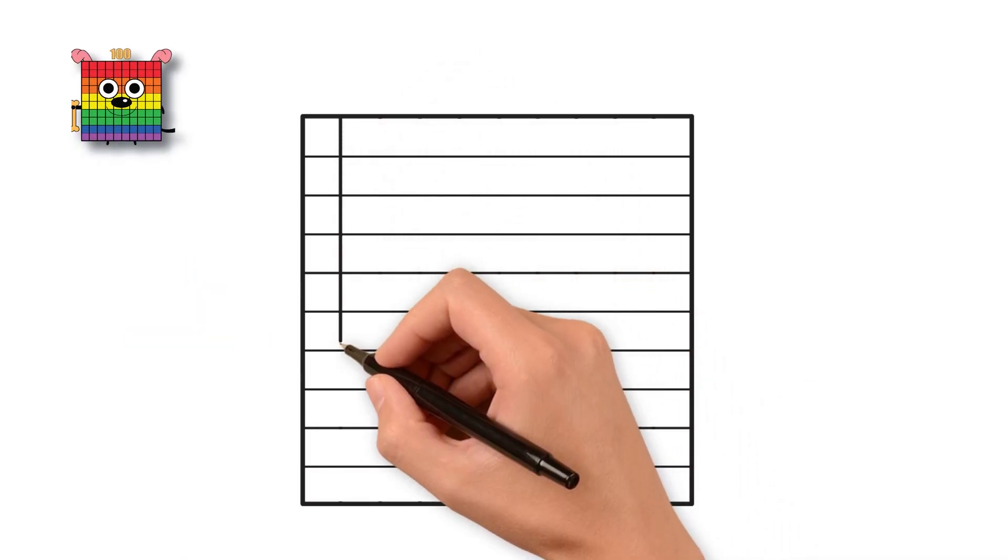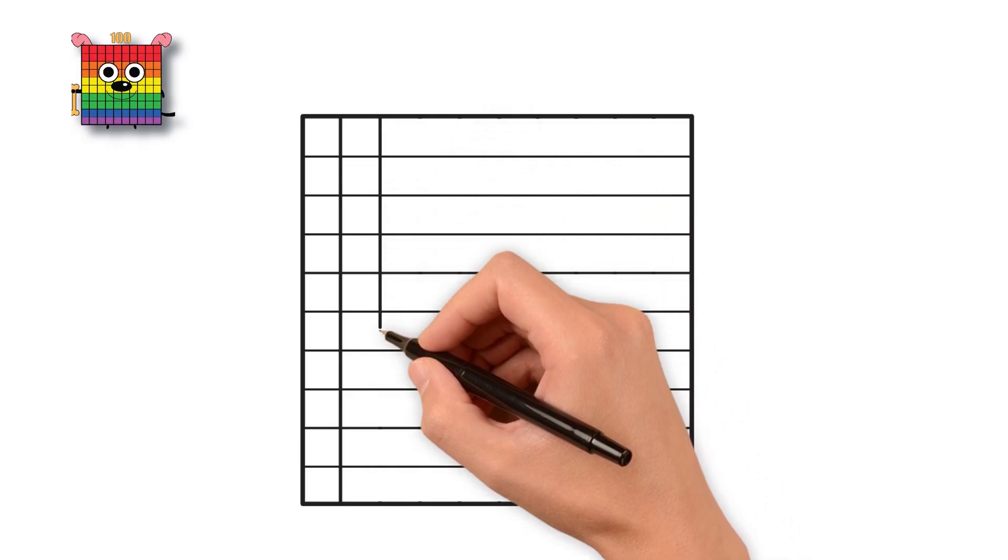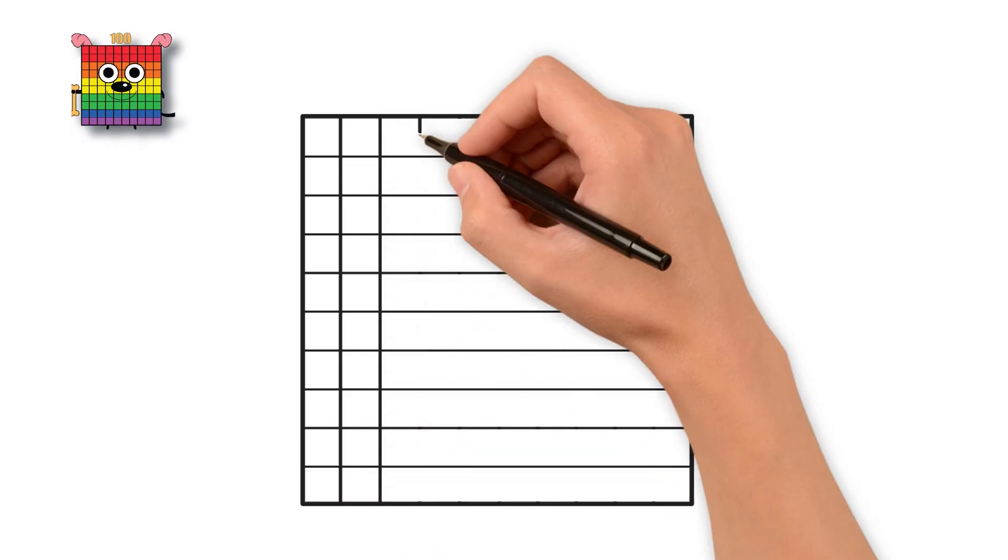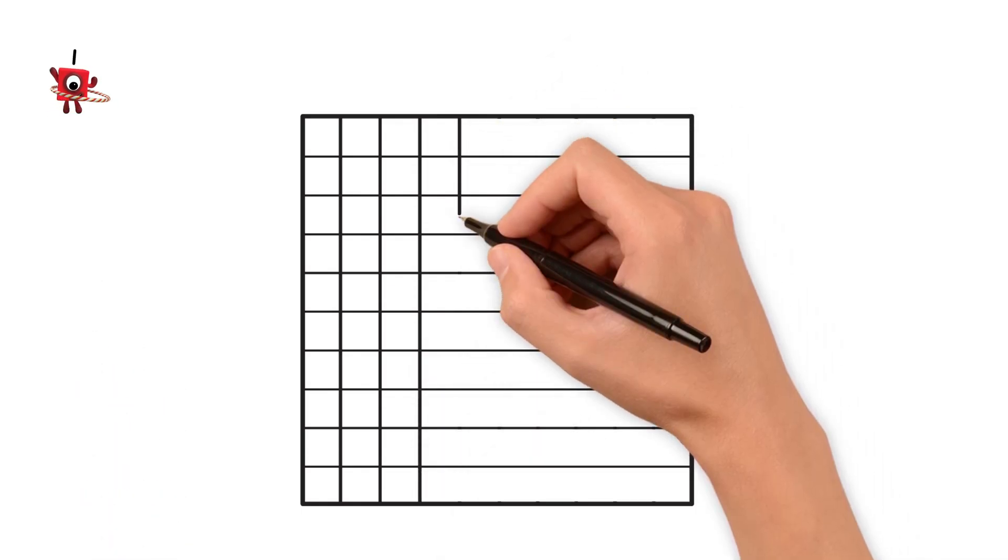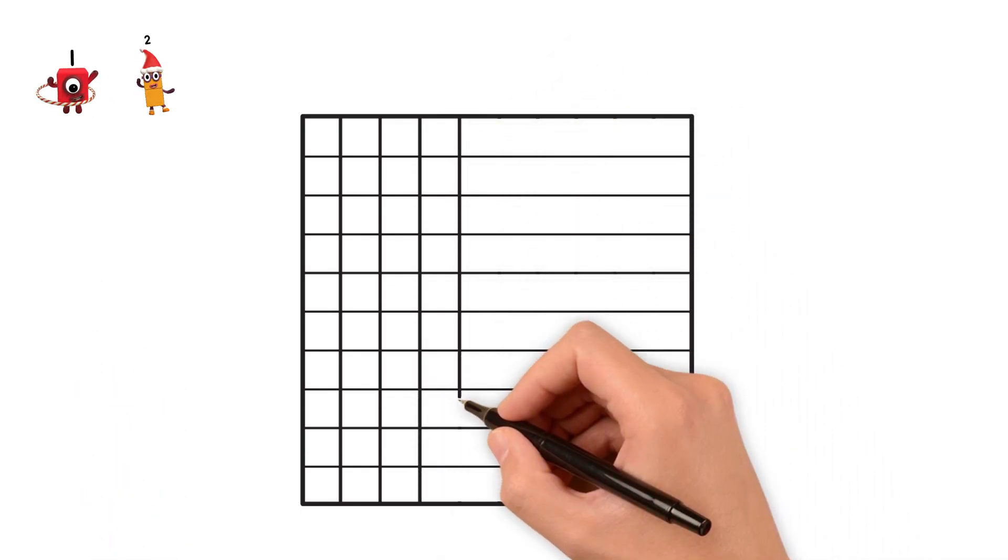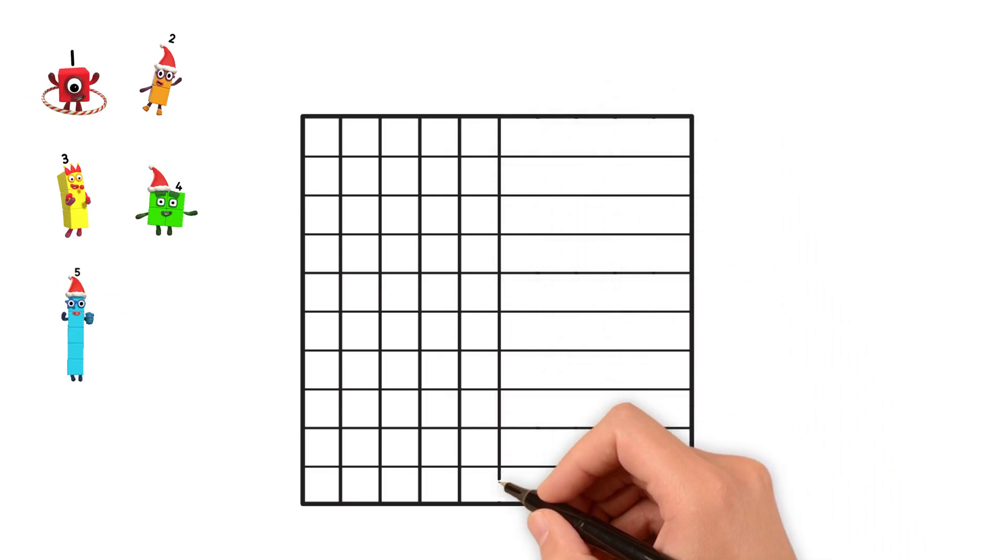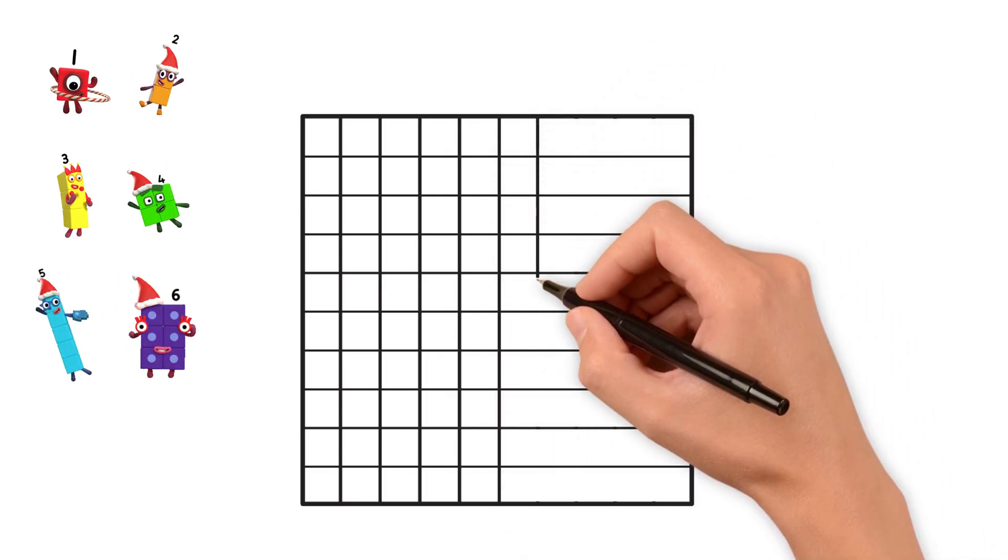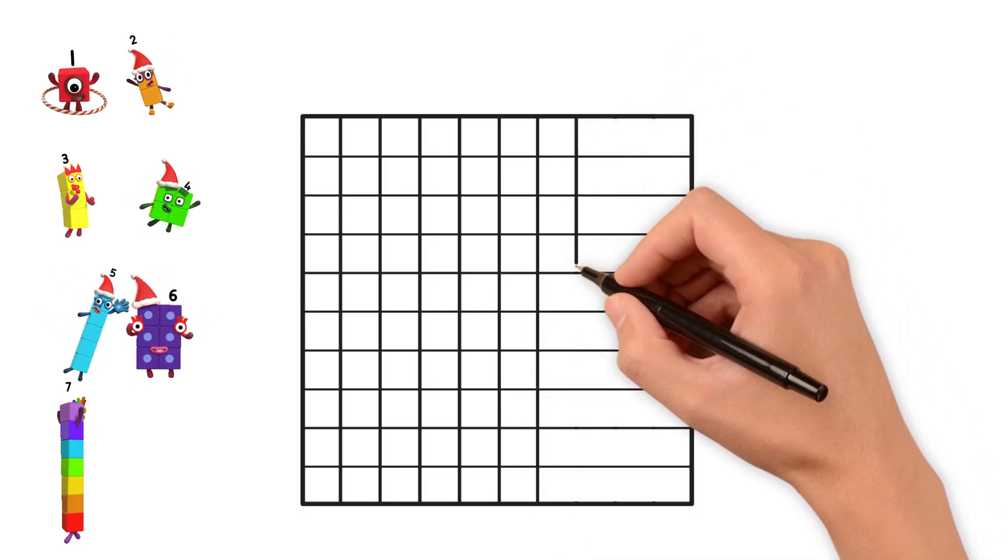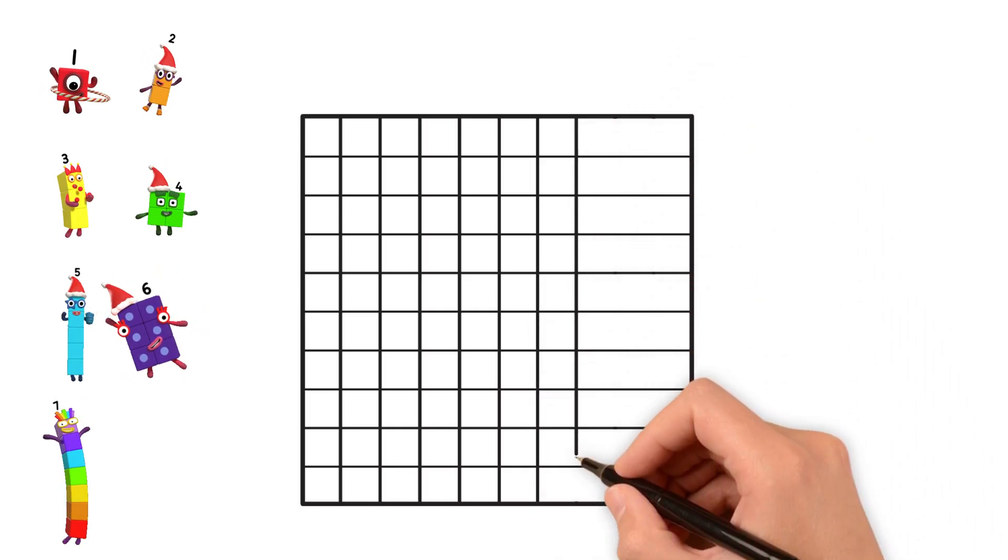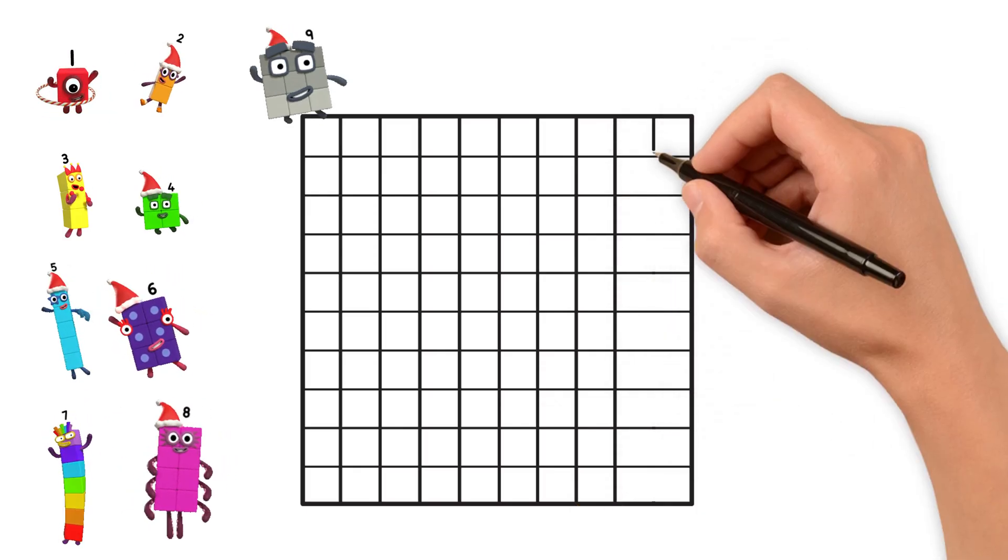Now, it's time for the vertical lines. These go up and down. Start from the left side. We need 9 vertical lines too. Count with me. 1, 2, 3, 4, 5, 6, 7, 8, 9.